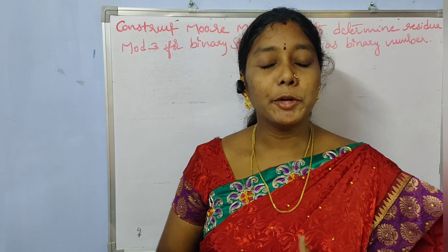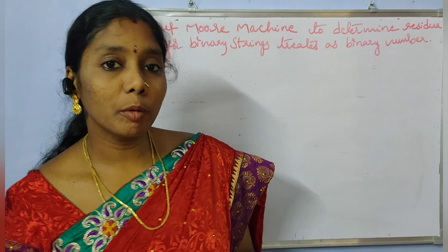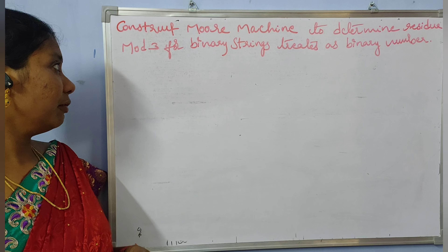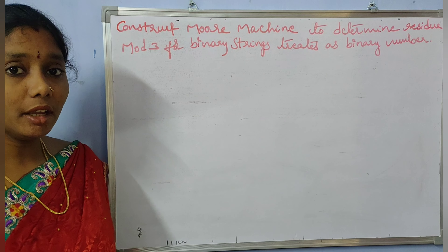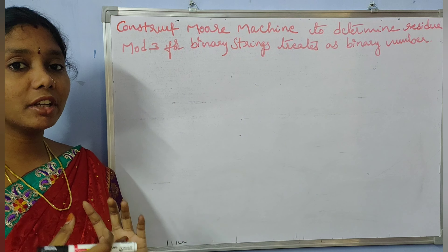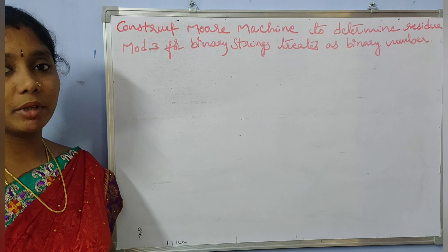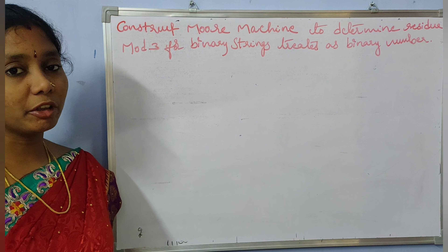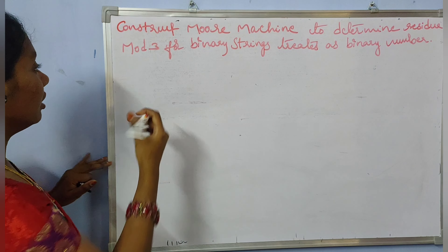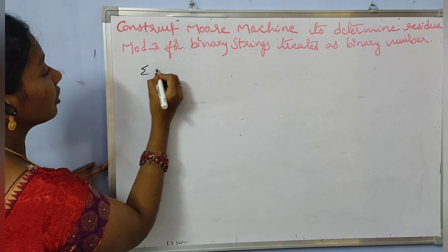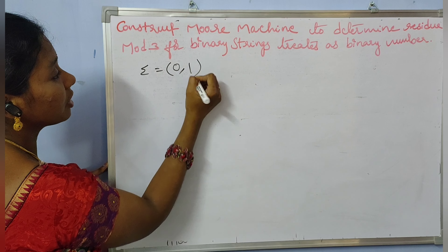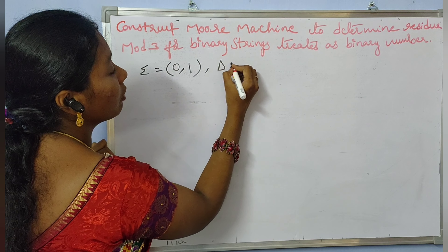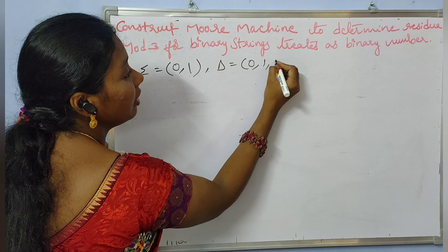Hi y'all, welcome back to my channel. Today's problem is about the Mealy machine. We need to construct a Mealy machine to determine the residue mod 3 for binary strings treated as binary numbers. The input string is a binary number, the input alphabet is {0, 1}, and the output alphabet is {0, 1, 2}.